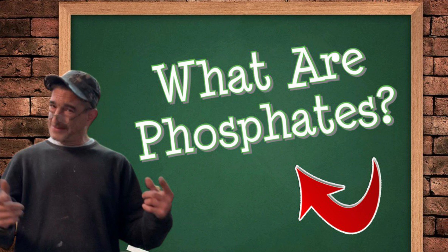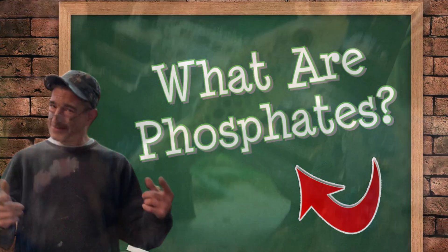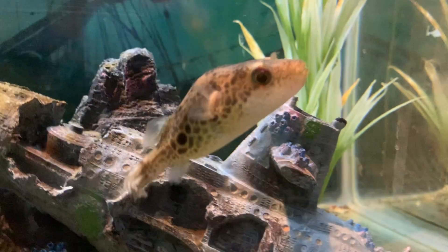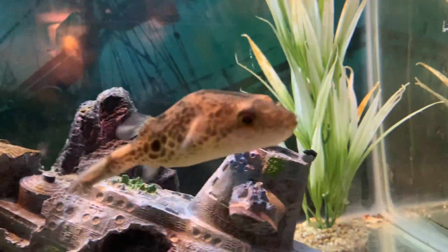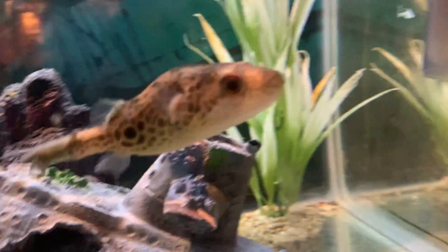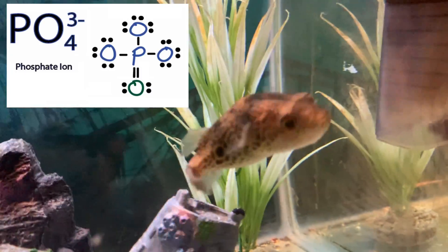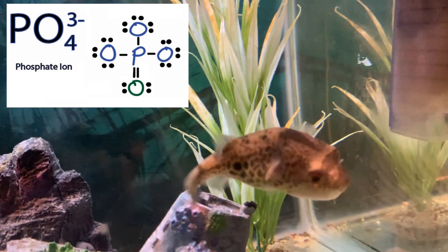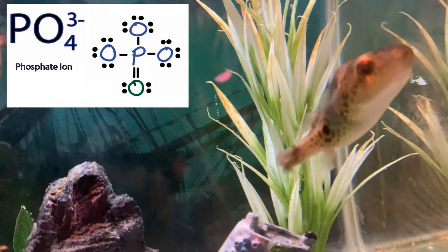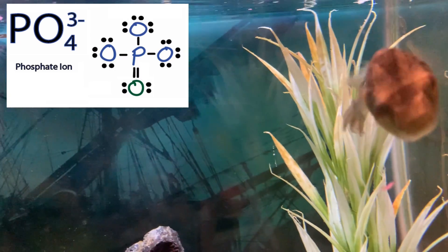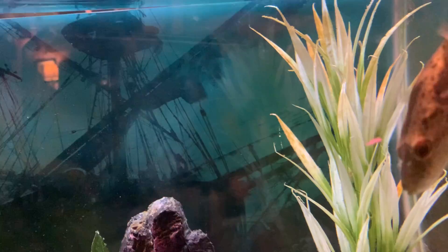To be honest, when I first got into the hobby I had no clue what a phosphate is. Phosphate — also known by scientific people as PO4, that's PO with a little four — is present in every aquarium, even though many aquarium owners aren't even aware it's there.